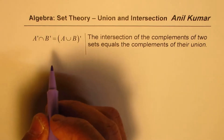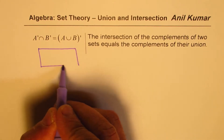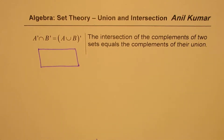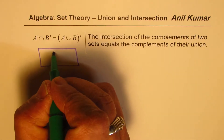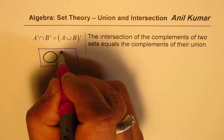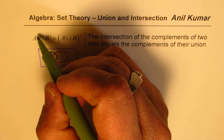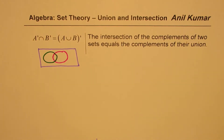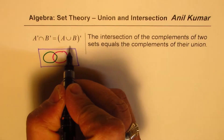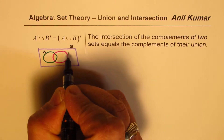Let us first understand what this really means. Complement means something which does not belong to a set. So here let me draw two sets A and B. Let's say this is set A, and let us take a set B of this form — let's say this is our set B. So these are the two sets. This is the sample space, this is the set A, and that is B.